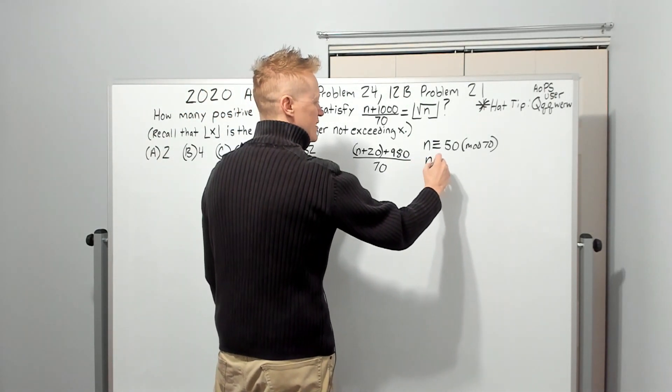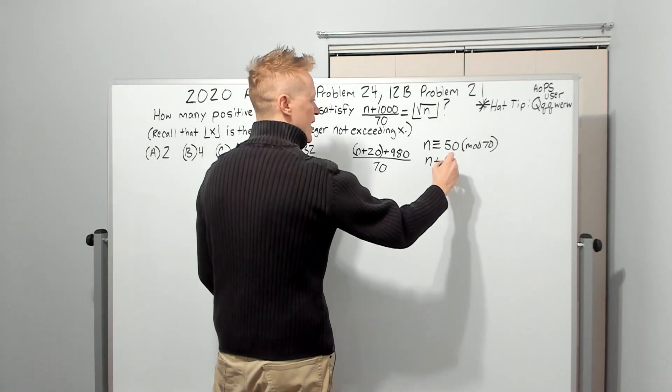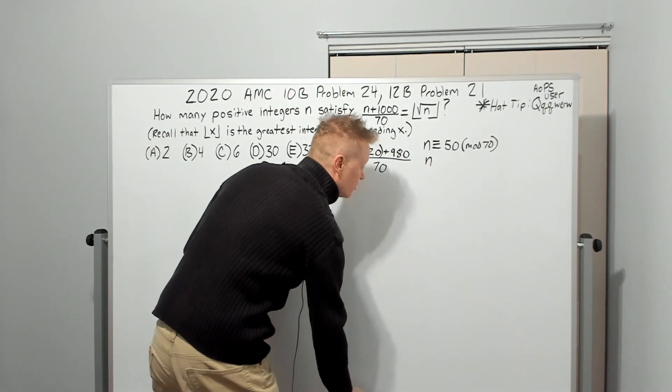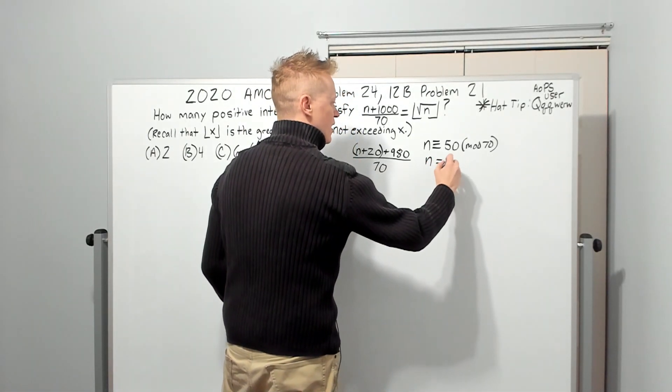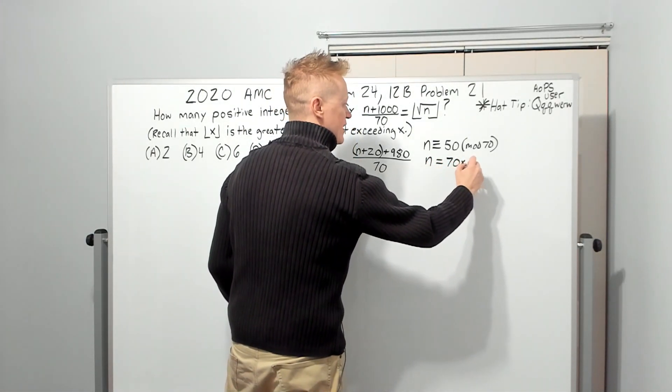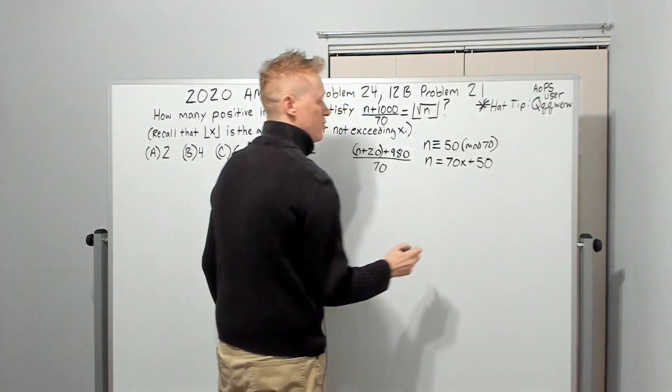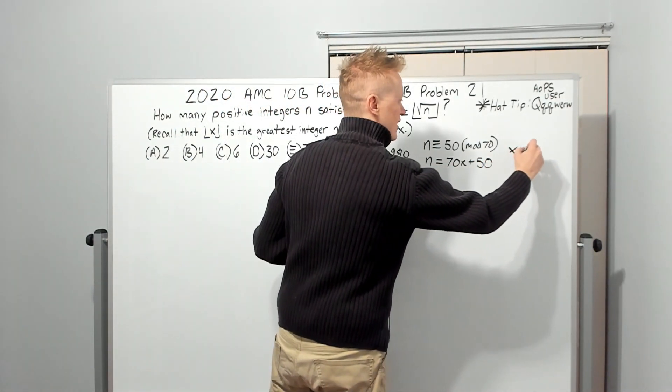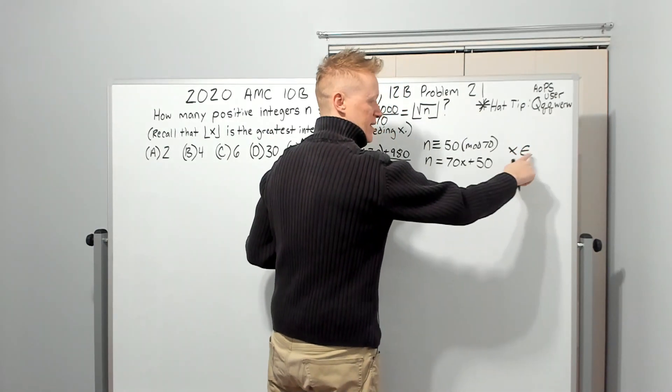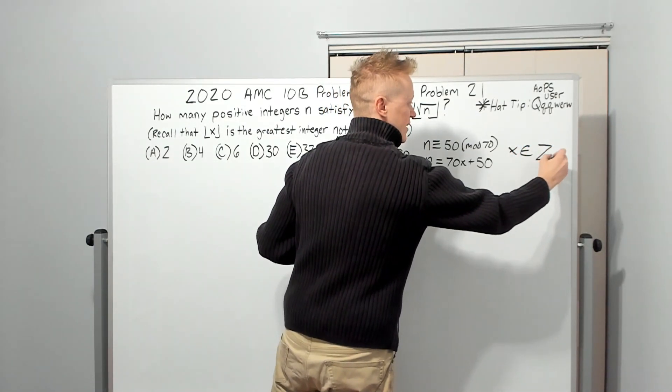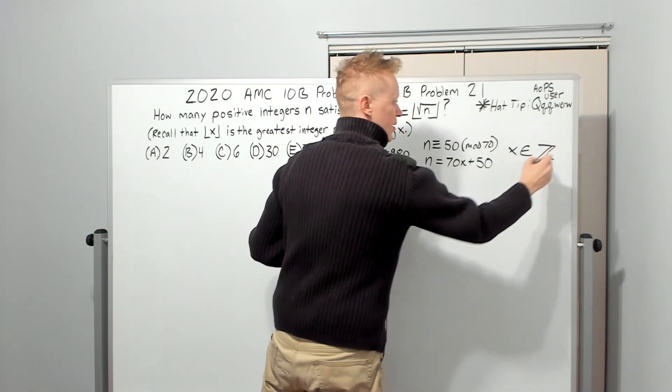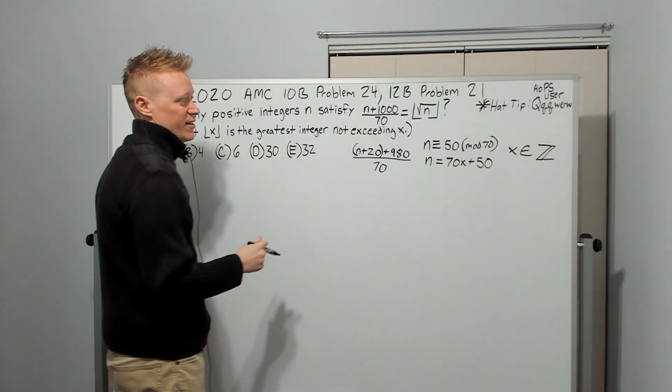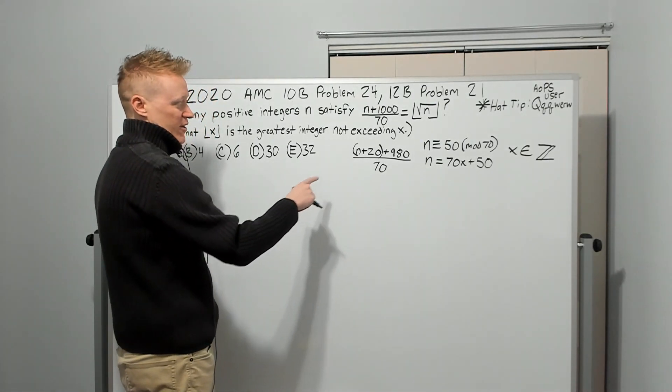Let's just give it a substitution. We're going to say that N is equal to some multiple of 70 plus 50. We don't know what that multiple is. Keep in mind, we know that X is an integer. This means is an element of capital Z with double bar means the set of integers. You'll learn that in set theory or number theory later on in life if you haven't learned it yet.